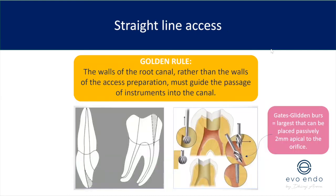The golden rule: the walls of the root canal — rather than the walls of the access preparation — should guide the passage of instruments into the canal. Make sure you've opened up the canal effectively enough. I'm an advocate of preserving pericervical dentine so I don't use Gates Glidden drills, but if you do, don't take them deep within the root canal system. They're acting as openers only — choose the largest that can be placed passively two millimeters below the orifice and just open it up slowly.